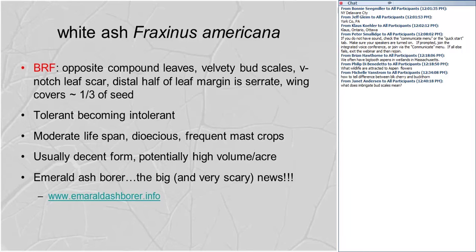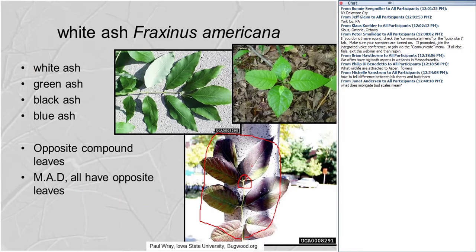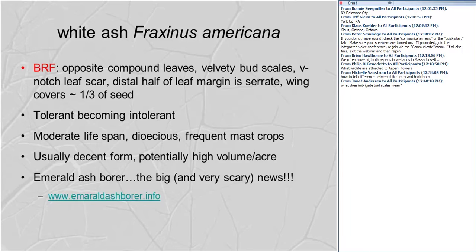Best recognizable features for white ash: opposite compound leaves — the only other opposite compound is box elder. Velvety bud scales. V-notched leaf scar. The outer portion of the leaflet is usually serrate. Moderate shade tolerance — starts tolerant but becomes intolerant. Moderate lifespan of about 150 years. Frequent mass crops roughly every two to three years. Usually decent form, can grow quickly and attain high volume per acre.